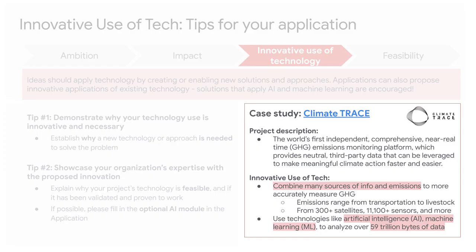Thanks to the earlier video, we're all well-versed in what Climate Trace does, so we'll jump straight into two reasons why their technology stood out. First, their technology combines many disparate sources of greenhouse gases, from obvious ones such as car emissions to less obvious ones such as emissions from livestock. To do this, Climate Trace combines data from 300-plus satellites and over 11,000 sensors, which is no easy feat. Secondly, Climate Trace is not daunted by 59 trillion bytes of data — using AI and ML, Climate Trace is able to quickly analyze the data and sort information into valuable insights for decision-making. Overall, we hope to see similarly dynamic projects that are forward-thinking and have a clear vision for execution.